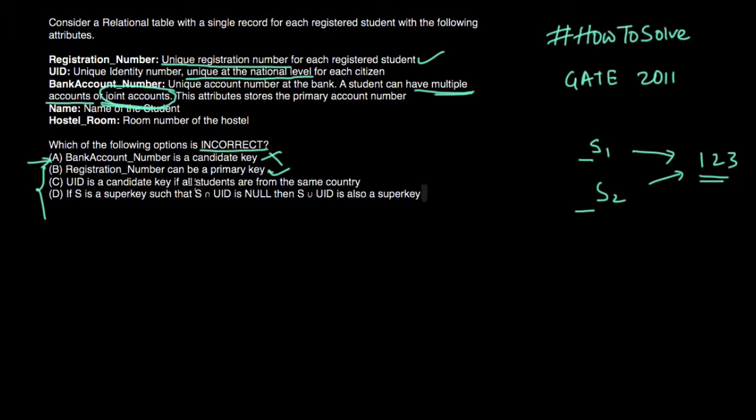UID is a candidate key if all students are from the same country. So this is correct because as we discussed if we have student from same country let's say India, at country level this UID is unique. As we have to store students from a single country it will be unique. So it can serve as a candidate key for that particular country.